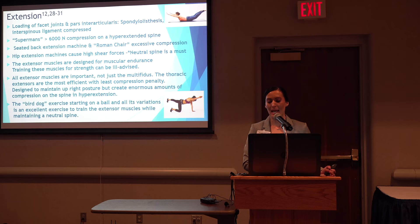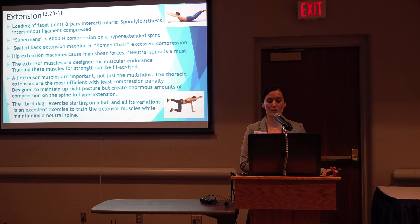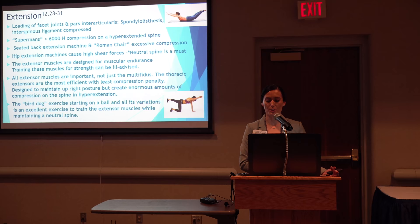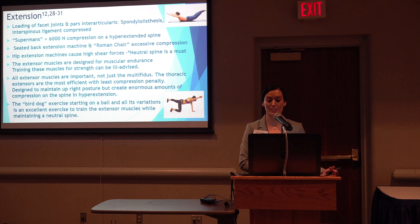As the spine extends, the facet joints and pars interarticularis are loaded and the interspinous ligaments compressed. Repetitive spine extension cycles can cause fatigue fractures leading to spondylolisthesis. Full-range extension exercises, commonly known as supermans, can result in over 6,000 newtons of compression on a hyperextended spine, and seated back extension exercises such as the Roman chair can cause excessive compression. The extensor muscles are thought to be designed more for muscular endurance, so exercise caution when training them for strength. The bird dog exercise can be used to train the extensor muscles while maintaining a neutral spine with low spinal penalty when done correctly.